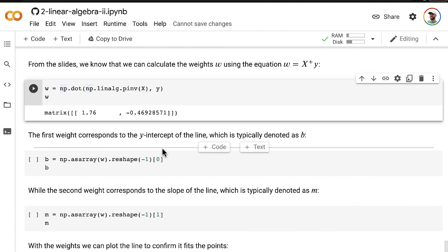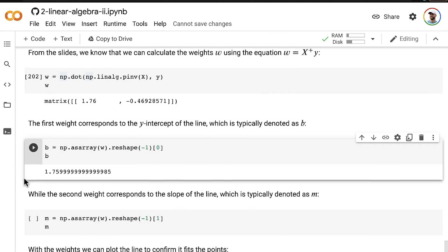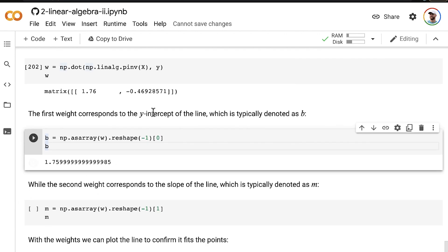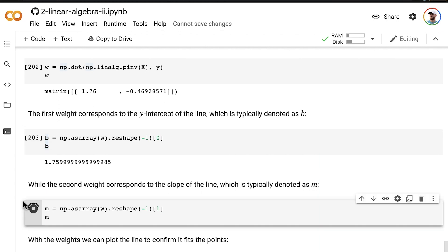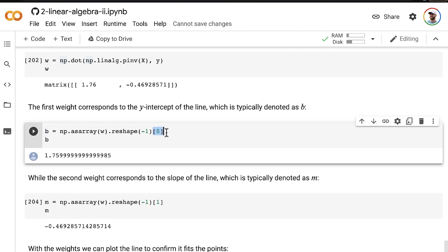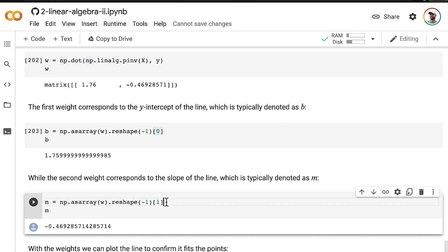The first weight here corresponds to the y-intercept of the line, which we typically denote as B in a line equation. This little chunk of code here is just to extract this first value and put it into a standalone variable. And then the second weight corresponds to the slope of the line, which again, in the equation of a line, we typically denote as M. Let's extract that out of here as well. The difference between these two chunks being that here I'm asking for the first element, and here I'm asking for the second element.